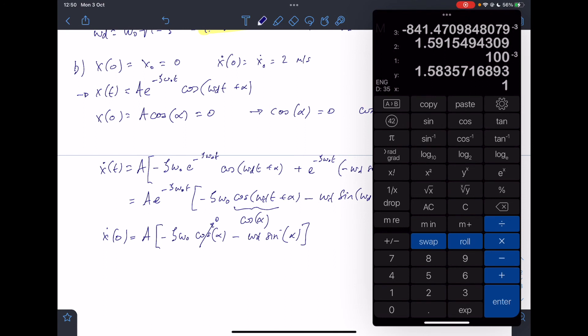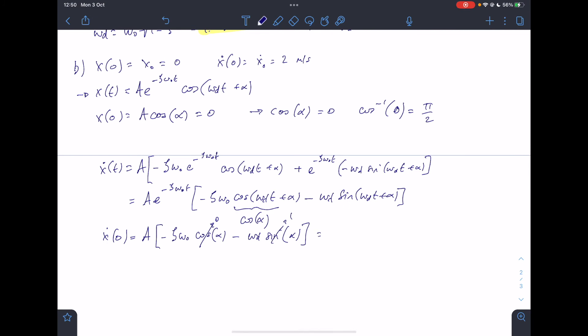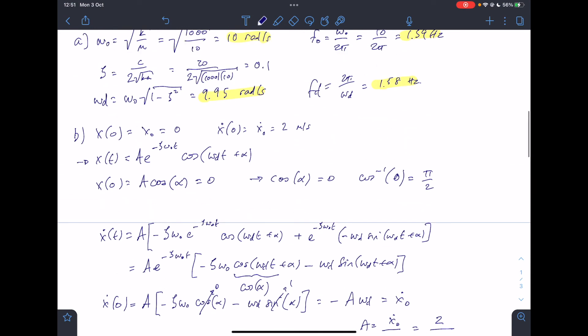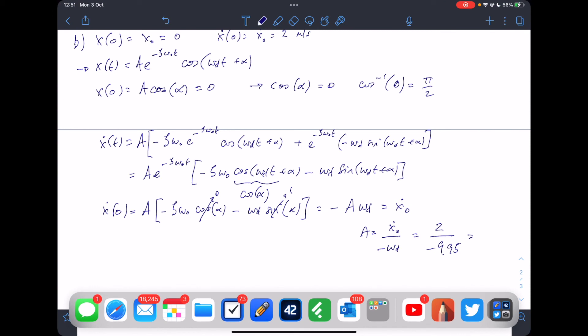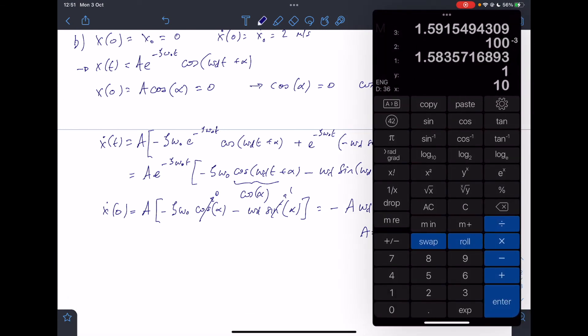Sine of pi by 2 is one, so that disappears there. And so I end up with this being equal to minus A omega d. We know that this is x dot of zero, so A is going to be x dot of zero divided by minus omega d. So this is going to be 2 divided by minus 9.95, which comes out to minus 0.201.